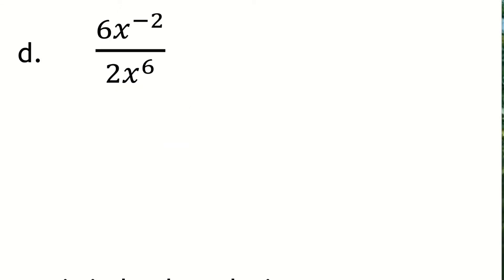And then for our final question, I can see that I'm dividing 6 by 2. 6 divided by 2 is 3, so I'm left with a 3 in the numerator. And then I have x to the negative 2nd over x to the 6th power.